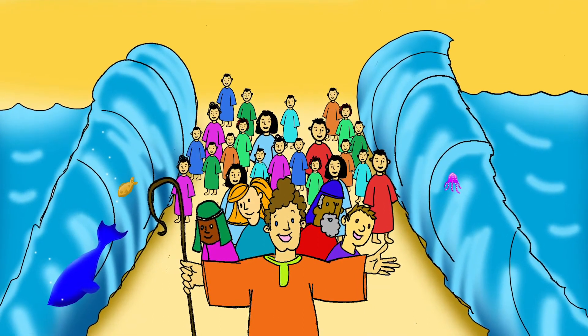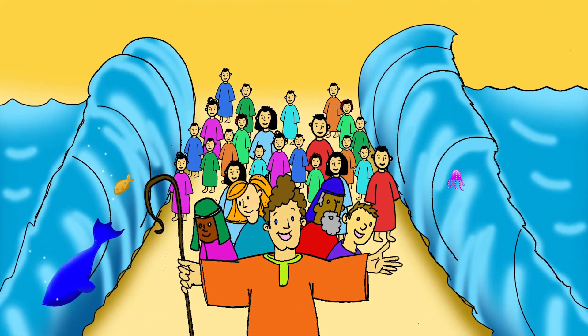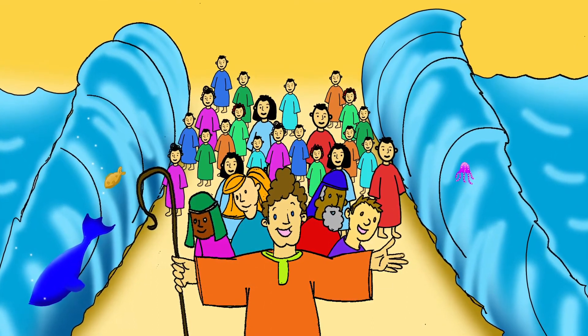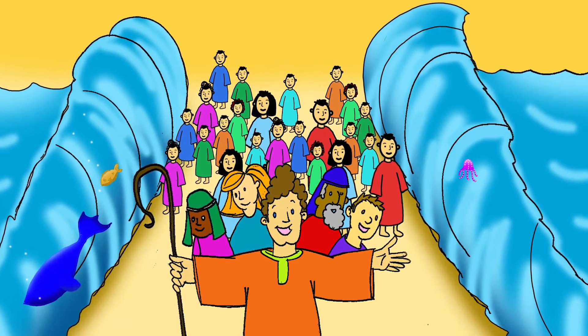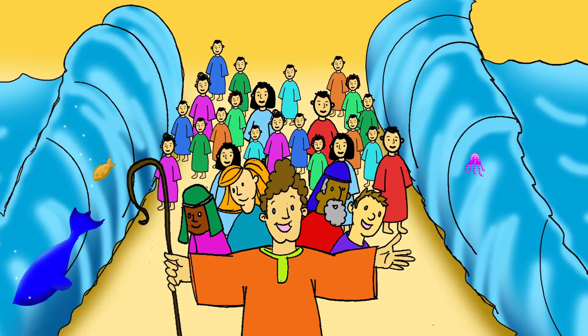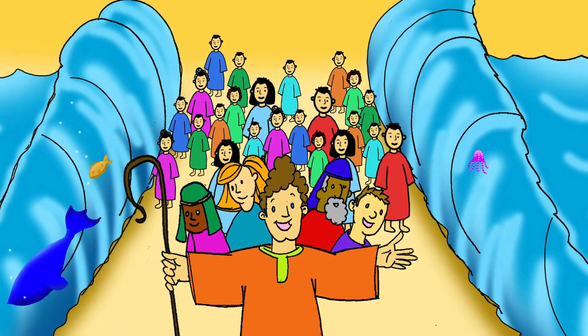Moses held his stick over the sea. All that night, the Lord drove back the sea with a strong east wind. So he made the sea become dry ground. And the water became a big wall on each side.